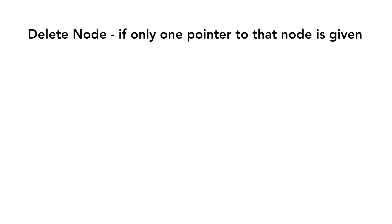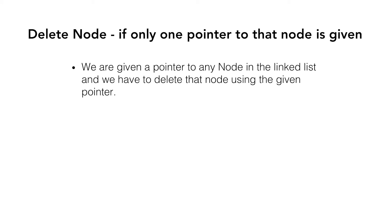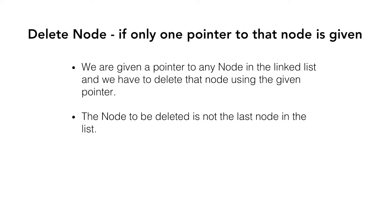In this video we will learn how we can delete a node if only one pointer to that node is given. That is, we are given a pointer to any node in the linked list and we have to delete that node using the given pointer, with one condition that the node to be deleted is not the last node in the linked list.